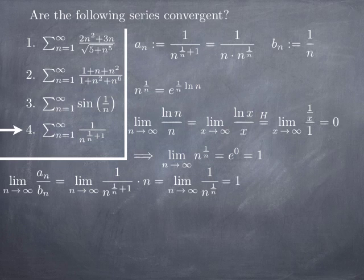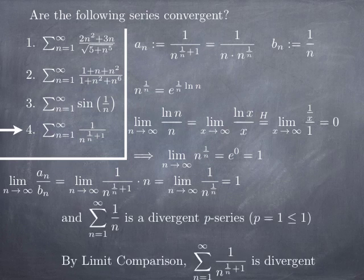Taking b_n = 1/n, the limit of a_n over b_n is the limit of 1/n^(1/n + 1) multiplied by n, which after canceling n gives the limit of 1/n^(1/n). Since n^(1/n) → 1, the reciprocal also goes to 1. So the limit of a_n/b_n is 1 — a non-zero positive constant. Since a_n and b_n are series with positive terms, by the limit comparison test both series have the same convergence behavior. The series of b_n = 1/n is a divergent p-series, and therefore by limit comparison the series of 1/n^(1/n + 1) is also divergent.